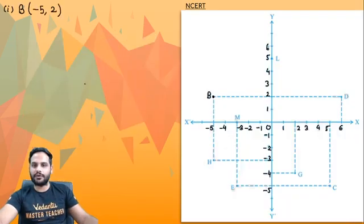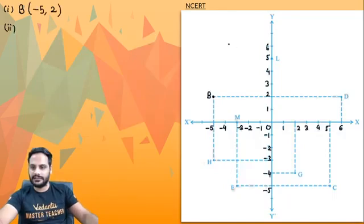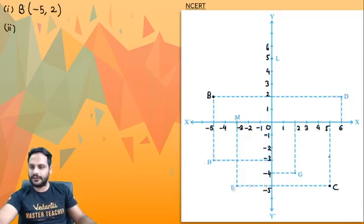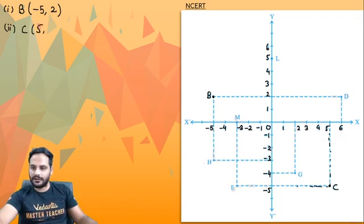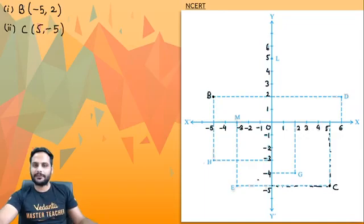Second question, coordinates of C. C is present over here. If I drop the perpendicular on the x-axis, it is intersecting at 5, so the x-coordinate of C is 5, and the y-coordinate is intersecting at minus 5. So coordinates of C are (5, −5).